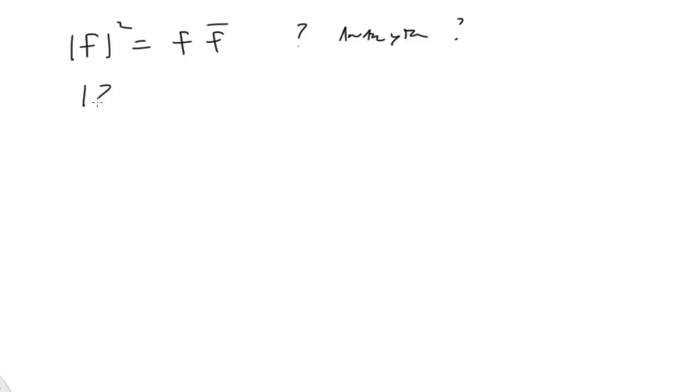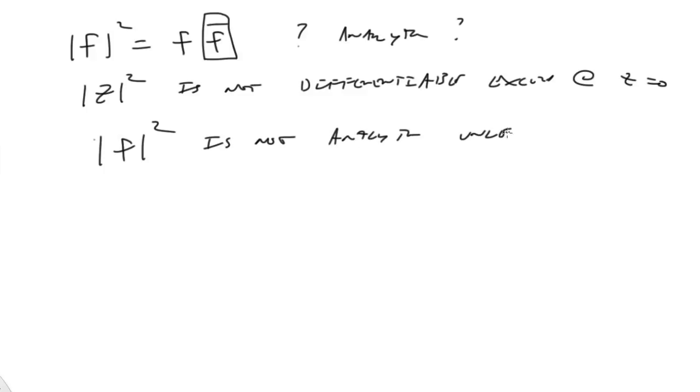Well, we already knew that z squared is not differentiable, except at z equals zero. And clearly, we also know that this is not an analytic function in general, unless f is a constant. So this function is not analytic unless f is equal to a constant.